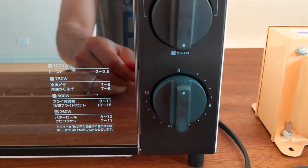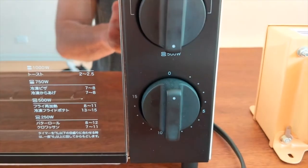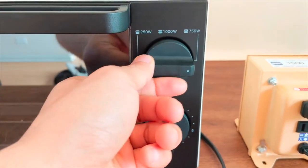The power knob comes with four settings: 250 watts, 500, 750, and the maximum is 1000.